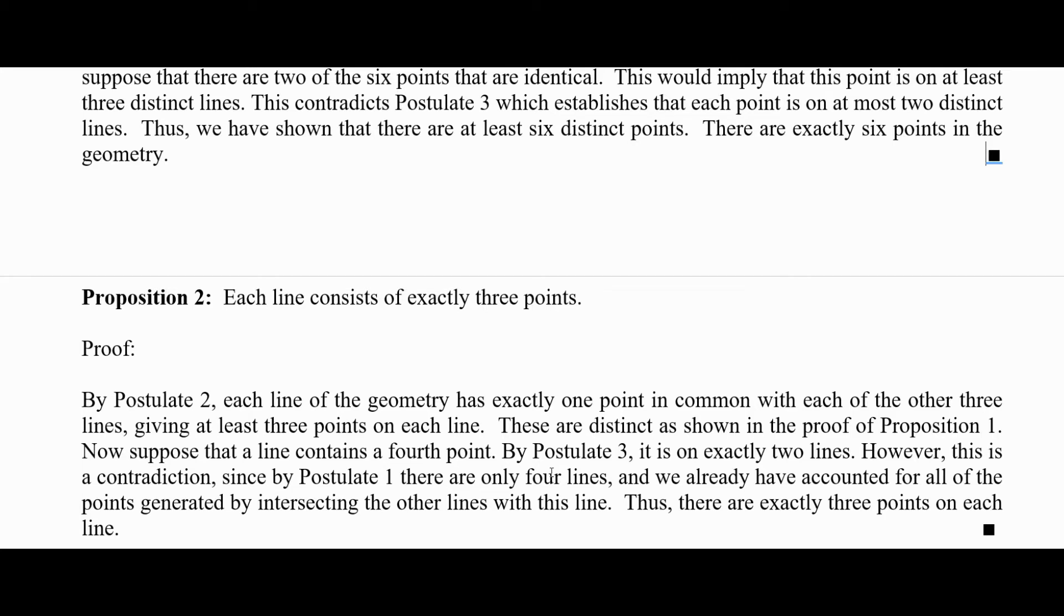Now suppose the line contains a fourth point. By postulate three, it's on exactly two lines. However, this is a contradiction. Since by postulate one, there are only four lines. We've already counted for all the points generated by intersecting the other lines with this line. Thus there are exactly three points on each line.